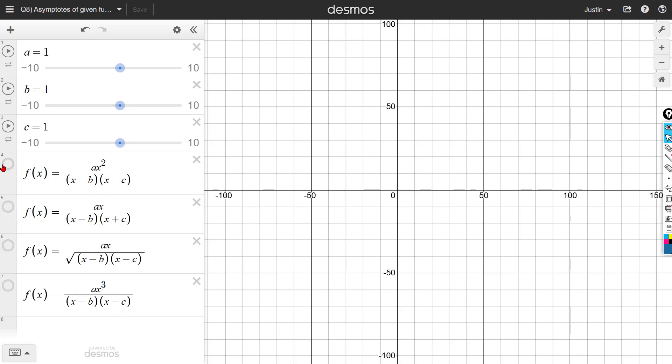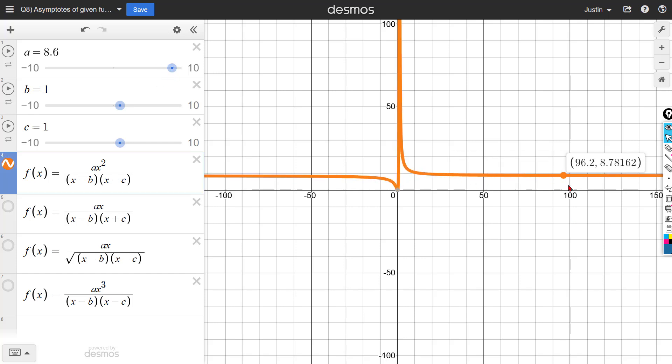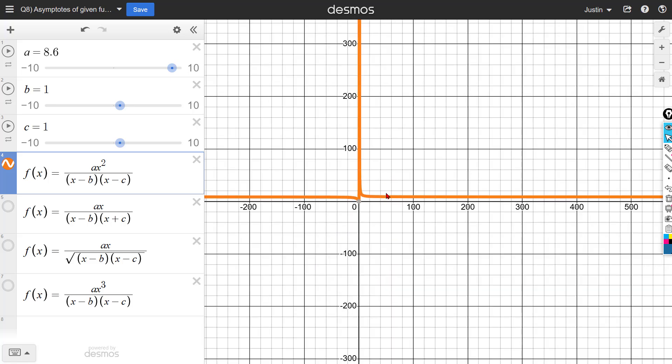Now, you can see I have written some equations. Here, let's look at this ax² / [(x - b)(x - c)]. The numerator, the y value is 1. If I just change this to any value, say, 8.6, now then the asymptote at y equals will be 8.6. As you can see, the y value, it eventually goes to 8.6. If you zoom out, you can see the y value is going closer and closer to 8.6.